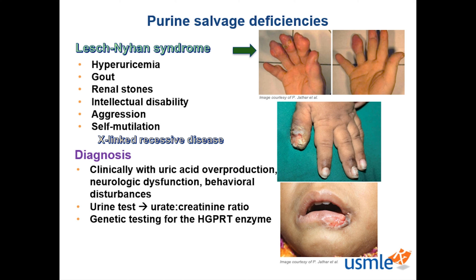Lesch-Nyhan syndrome is usually diagnosed clinically once a triad of uric acid overproduction, neurological dysfunction, and cognitive and behavioral disturbances occur together. It should always be on the differential when a child is engaged in aggressive, self-inflicting behaviors. Diagnostically, a urine test can show an elevated urate to creatinine ratio. Genetic testing for the HGPRT enzyme can be done but is not typically routinely performed.